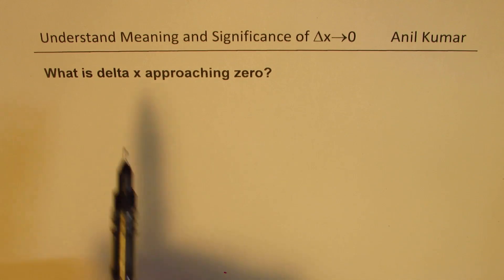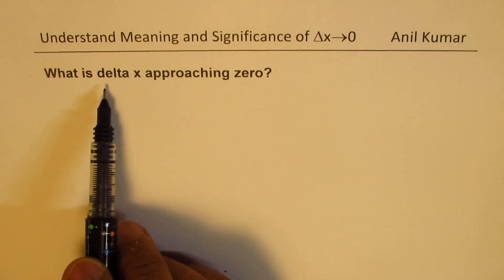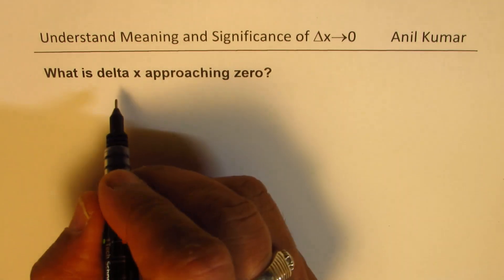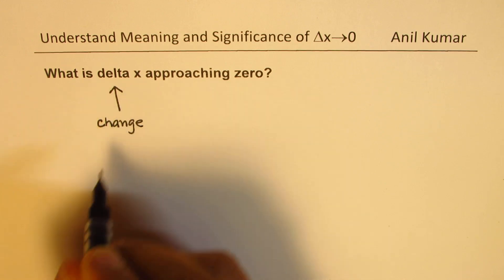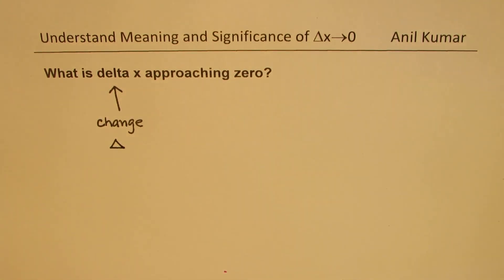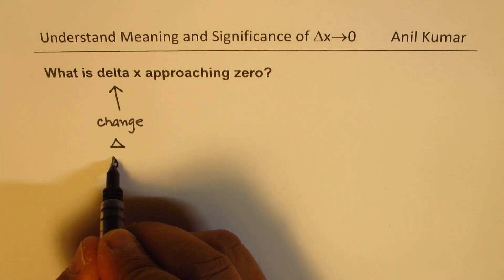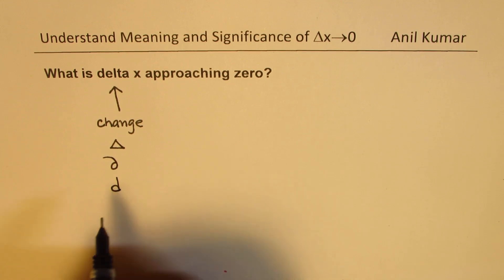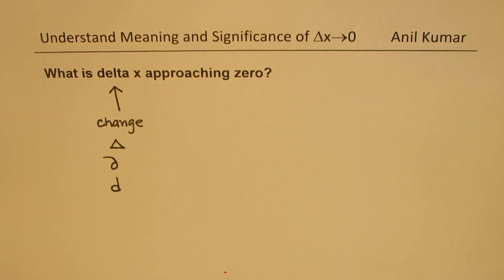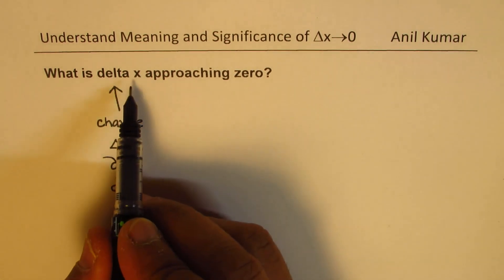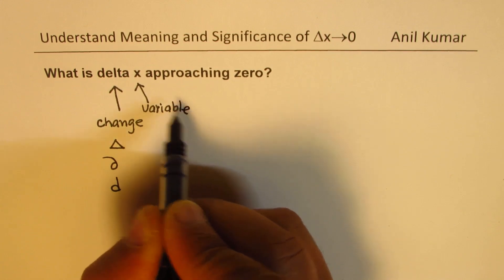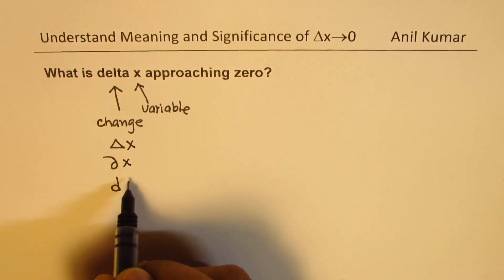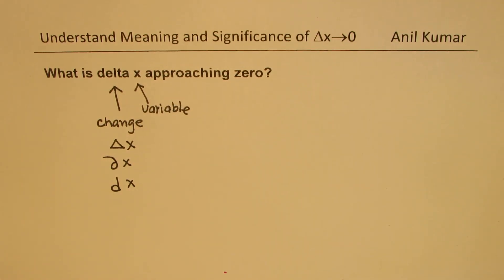I've broken down these words — we are looking for Delta X approaching zero. Whenever we say Delta, it is a change. We use Delta as a change; normally the symbol used is Delta, like a triangle. We will also be using the d/dx symbol. So these three symbols will be used for Delta, which means a small change in X, where X is your variable. Delta X means change in that variable, whichever we are talking about.